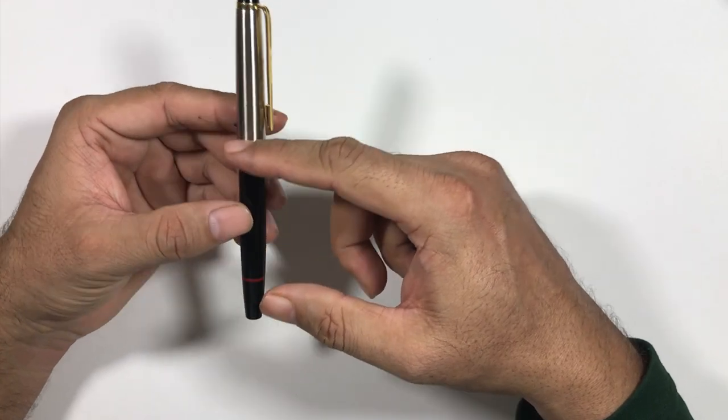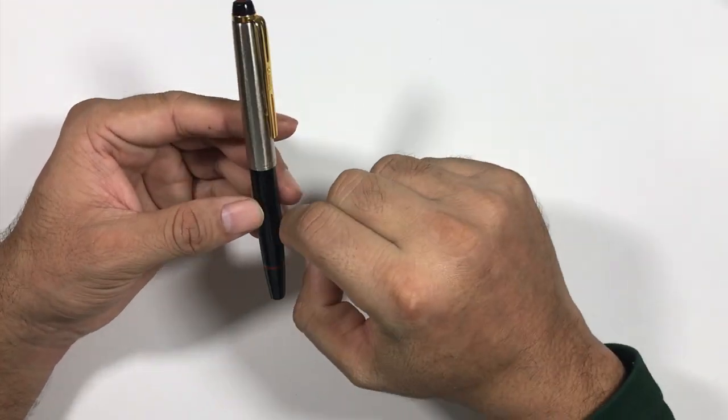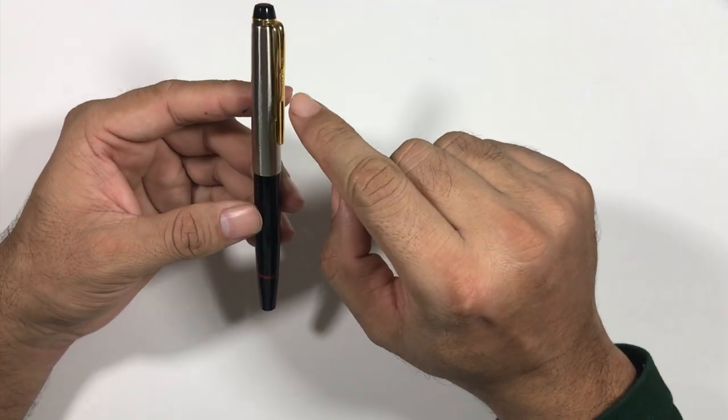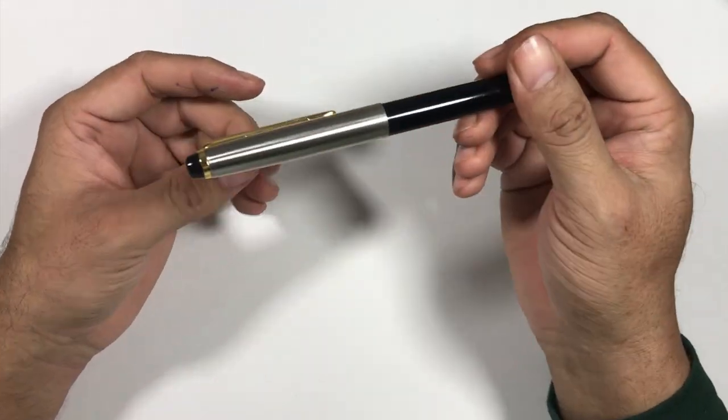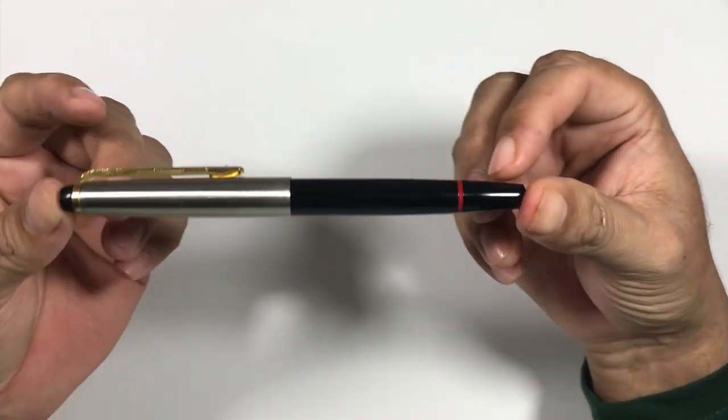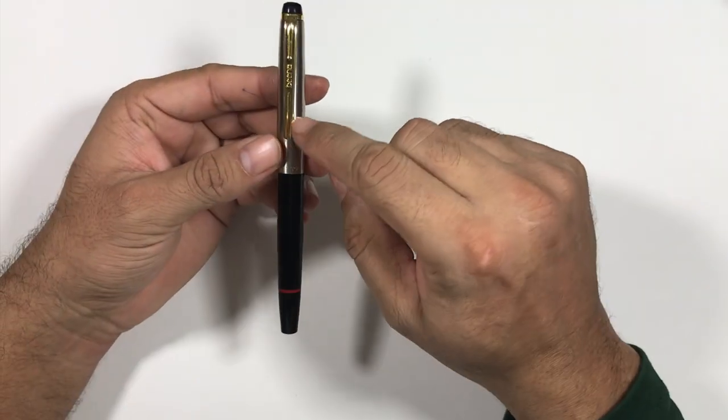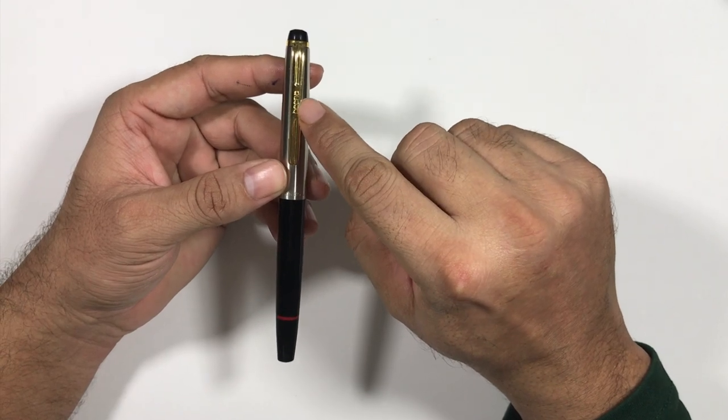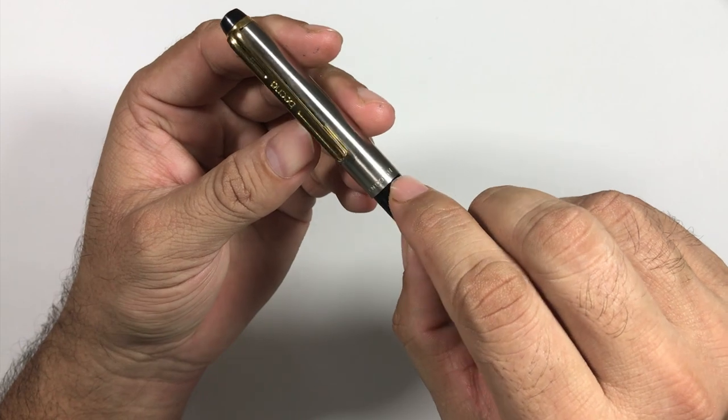The cap is made of steel with a gold-colored clip. This is standard—they only make this single model with steel caps and golden cap clips. You can see Beena written on the clip and Lincoln written on the cap band.